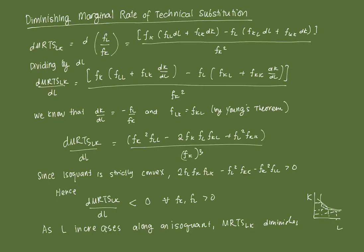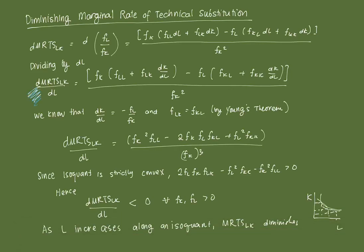So how do we start with our proof? We want to see the change in MRTS_LK, and we know that MRTS_LK equals the marginal product of labor divided by the marginal product of capital. For simplicity, we denote that as FL over FK. To get the derivative of FL over FK, we take the total differential and expand it using the quotient rule, and we get the form: FK times FLL times dL plus FKL times dK, minus FL times FKL times dL plus FKK times dK, all over FK squared.